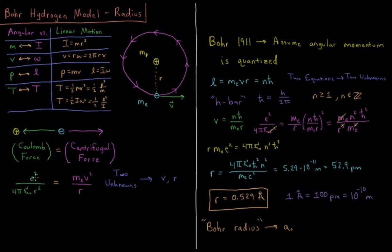We know e, we know π, we know ε₀, we know mass of the electron, but we don't know its velocity and we don't know its radius. So this is a situation of two unknowns, v and r. How do we solve an equation with two unknowns? Well, we have to generate another equation, then it'll be two equations, two unknowns.